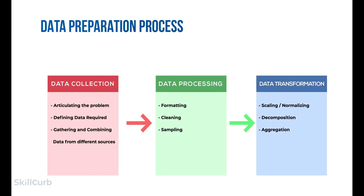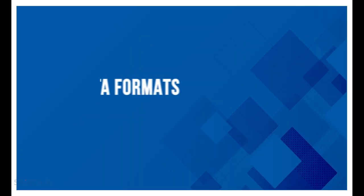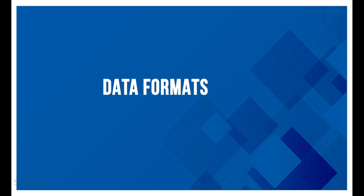The data preparation process begins with data collection. The problem statement should be clear to know what type of data needs to be collected, what the data features should be, and where to collect the data. After data collection, we move to the data pre-processing stage, where the data is formatted to a standard protocol. In the final stage, the data is transformed into a machine-understandable format — which is only numerics.